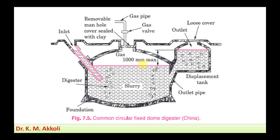As digestion takes place, gas is released, and a space above the slurry is provided in the construction of the digester to hold the gas. This dome structure is made of masonry construction — brick and cement — and skilled workers are required to construct it. After gas storage, the digested slurry becomes lighter in weight.